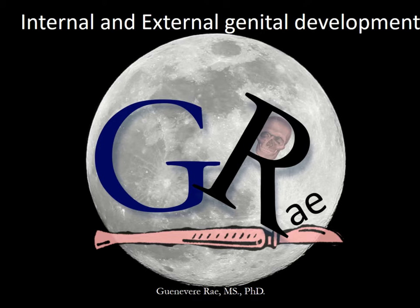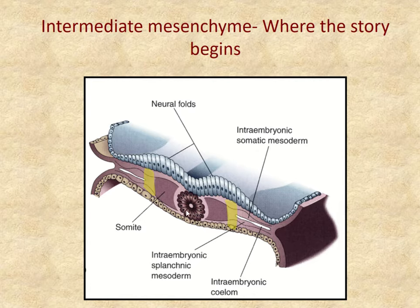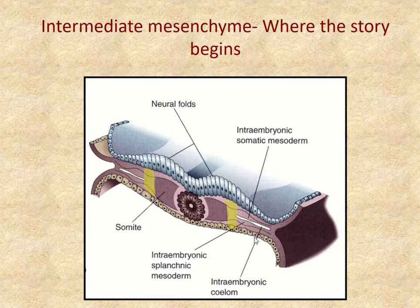Hi, I'm Dr. Rae, and I'm here today to talk to you about the internal and external genital development in the embryo and fetus. This story begins in intermediate mesoderm. Before folding of the embryo, we had paraxial mesoderm developing into somites, lateral mesoderm separating into somatic and splanchnic mesoderm, and mesoderm in the middle called intermediate mesoderm — which is the mesoderm that will develop into the urogenital system.